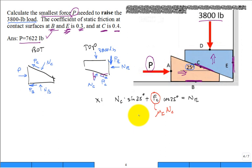Sum of the forces in the Y: we're going to get N_C times the cosine of 25 degrees going up. Then coming down we have μ_C N_C times the sine of 25 degrees, we have μ_E N_E, the friction at E that's completely down, and then the 3,800 pounds down.